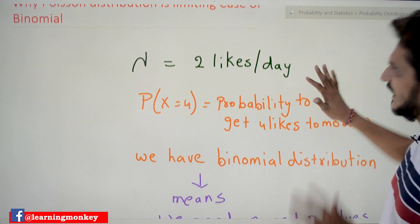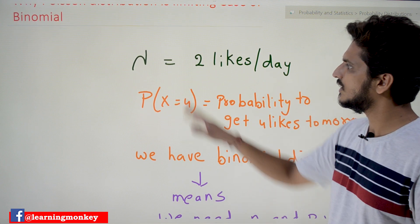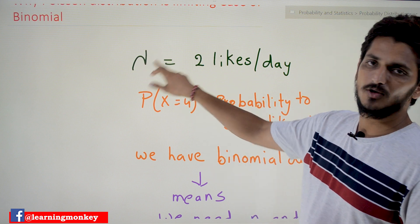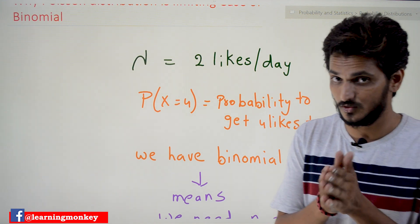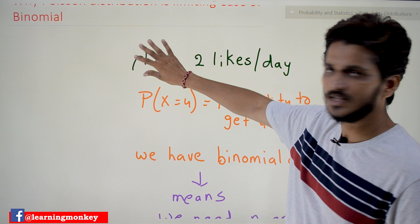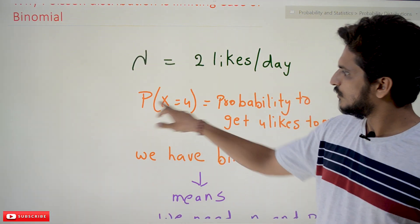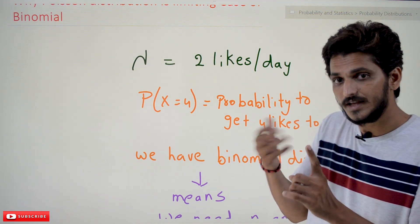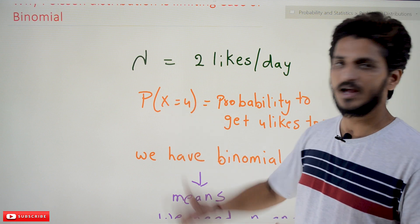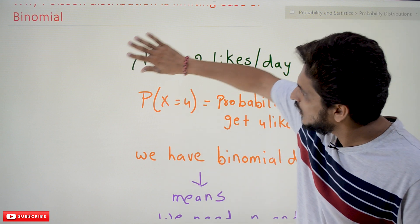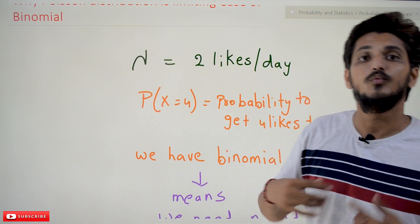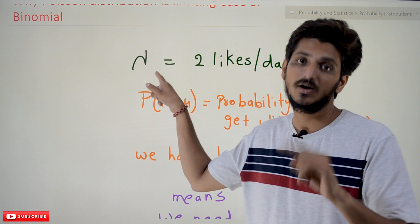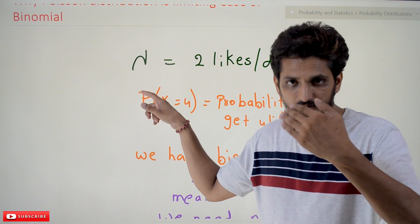Why is n tending to infinite? That is the point you are going to understand in this class. We are taking the same example from our previous classes: if you post a video on YouTube and someone tells you the lambda value — lambda is equal to 2 likes per day, meaning on average you are going to get 2 likes per day. They ask you: what is the probability of x equal to 4, meaning in one day, what is the chance you are going to get 4 likes? If you are provided with only the lambda value, we will go with Poisson's distribution, because n and p values are not provided.